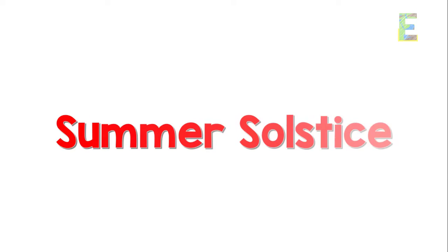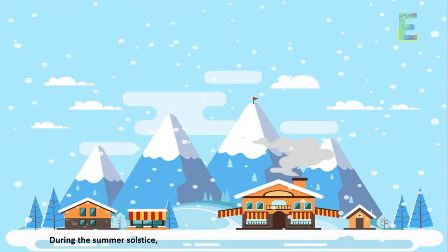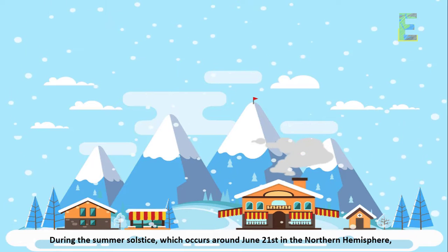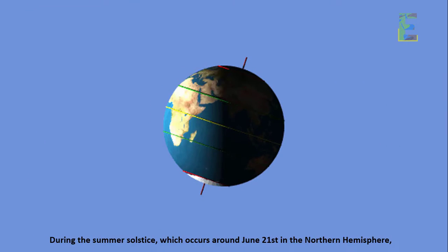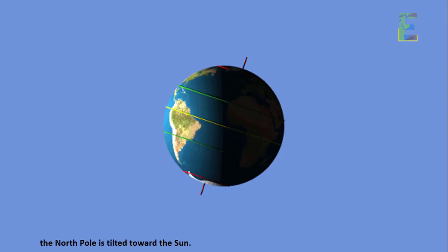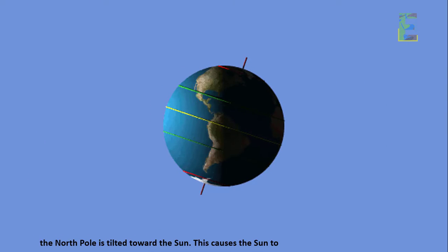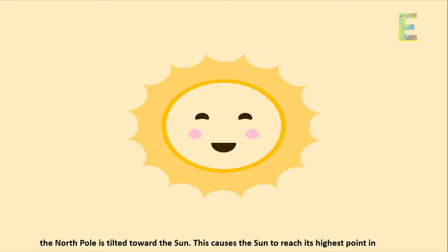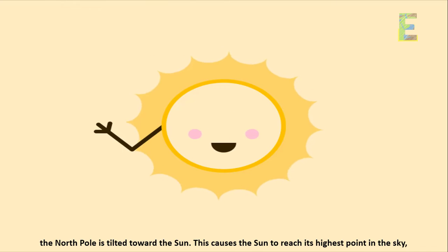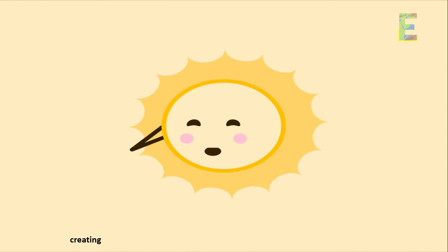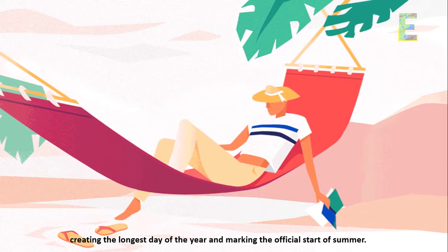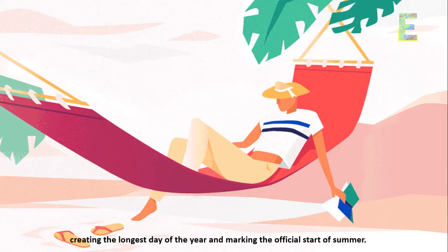Summer solstice — during the summer solstice, which occurs around June 21st in the northern hemisphere, the north pole is tilted toward the sun. This causes the sun to reach its highest point in the sky, creating the longest day of the year and marking the official start of summer.